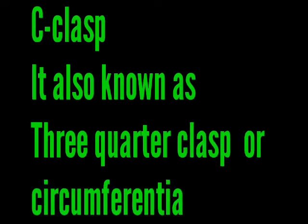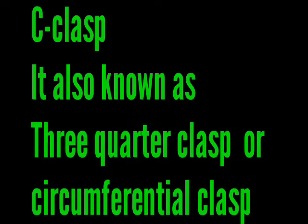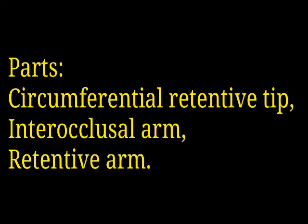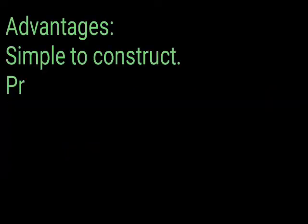C clasp is also known as a three-quarter clasp or a circumferential clasp. The parts are: circumferential retentive tip, inter-occlusal arm, and retentive arm.